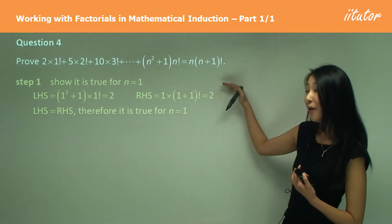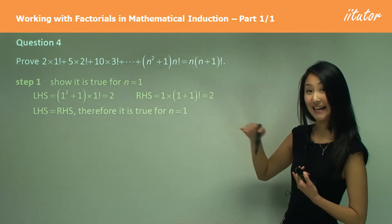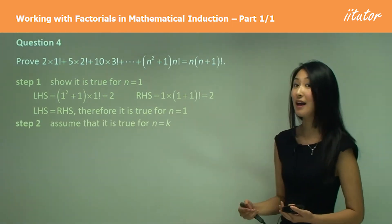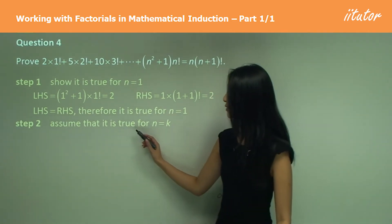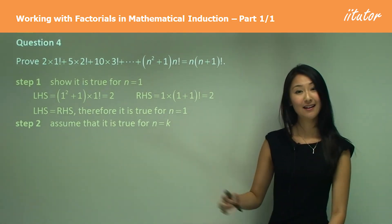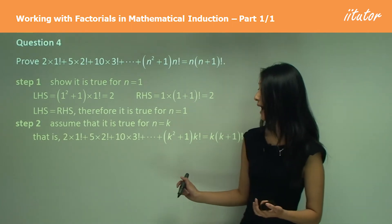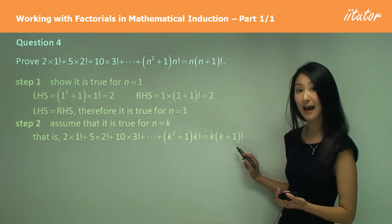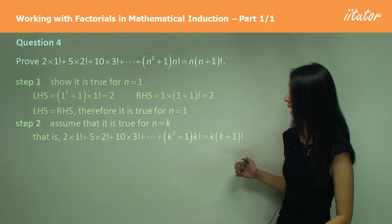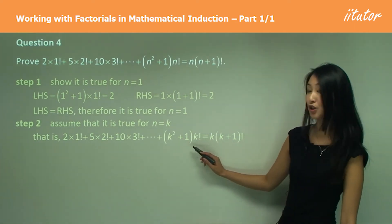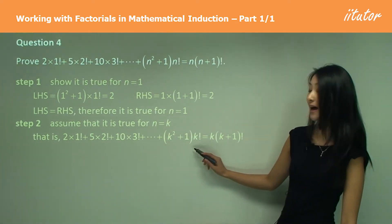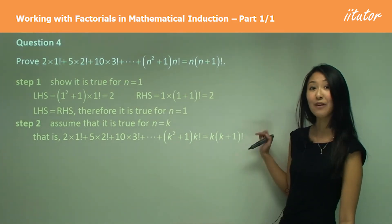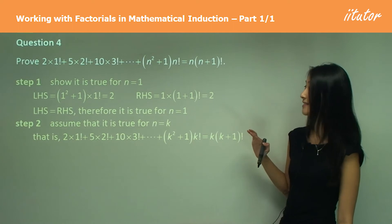Make sure to write all these steps when setting it out in the exam. Moving on to step 2, we assume that it is true for N equals K — that is, we write the new equation using K. We're assuming that when we substitute in K, the left hand side does indeed equal the right hand side, and we use this assumption in the next step.